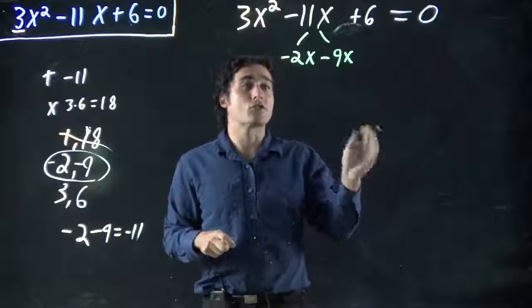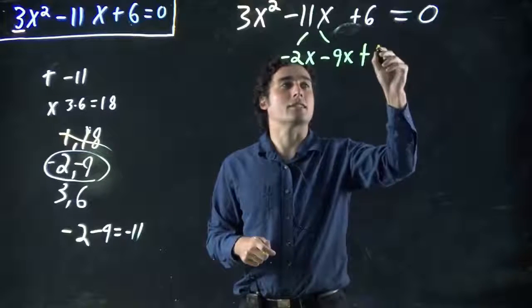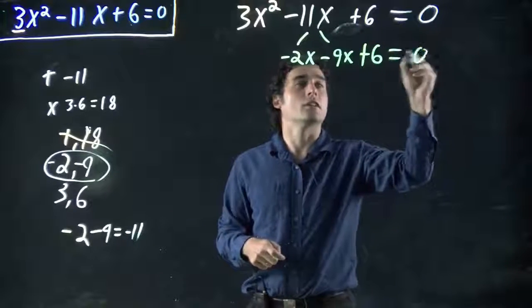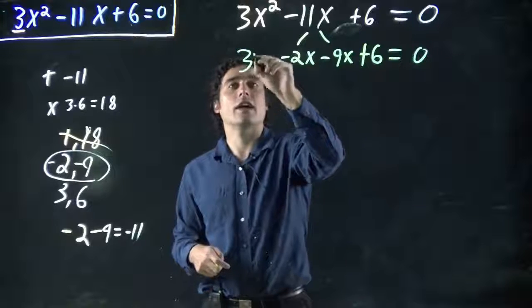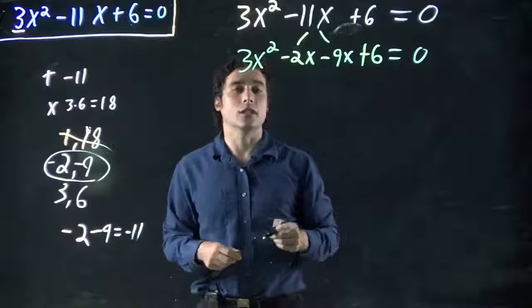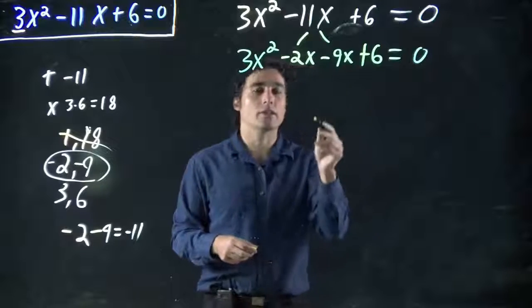And bear with me, you're going to see there's a reason, a method to my madness. But this plus 6 is still here, still all equal to 0, and this 3x² is also still there. So why did we do this?